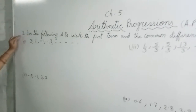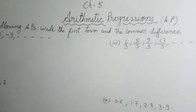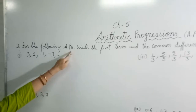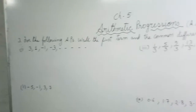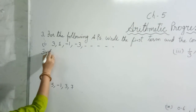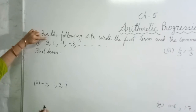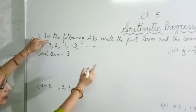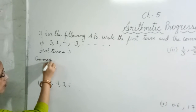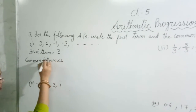In this question, they are telling: for the following APs, write the first term and the common difference. They have declared these are APs, so we have to write the first term. It's very simple — the first term is 3. Then they are telling the common difference.